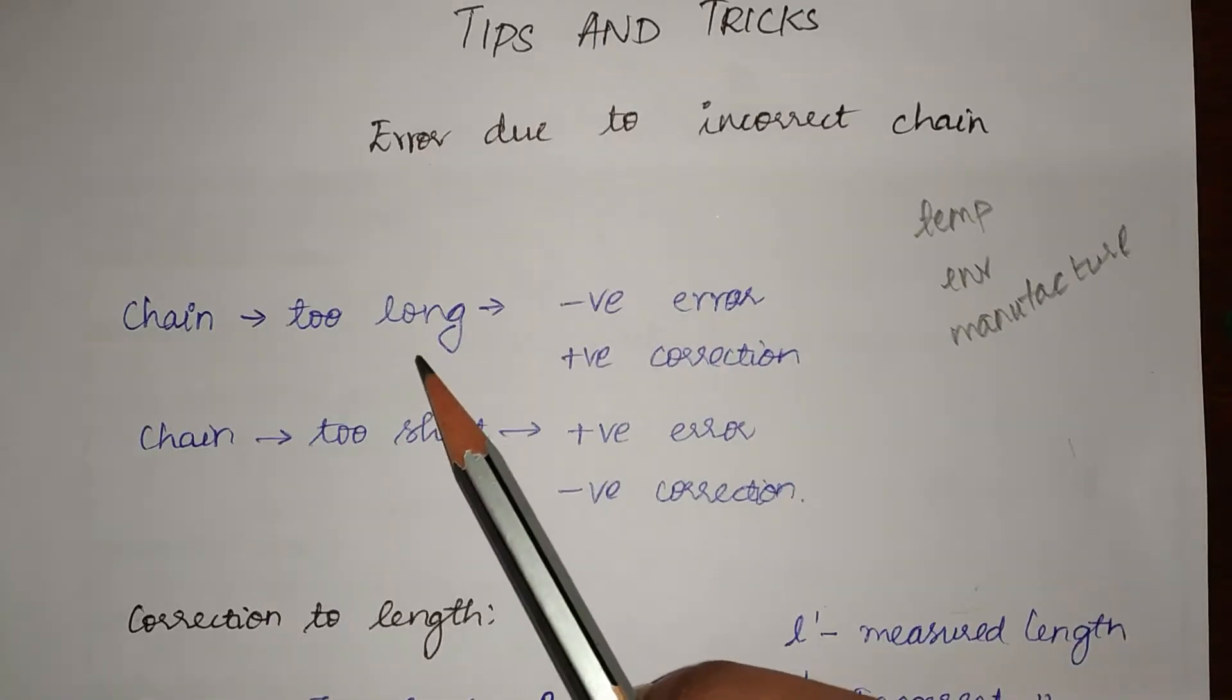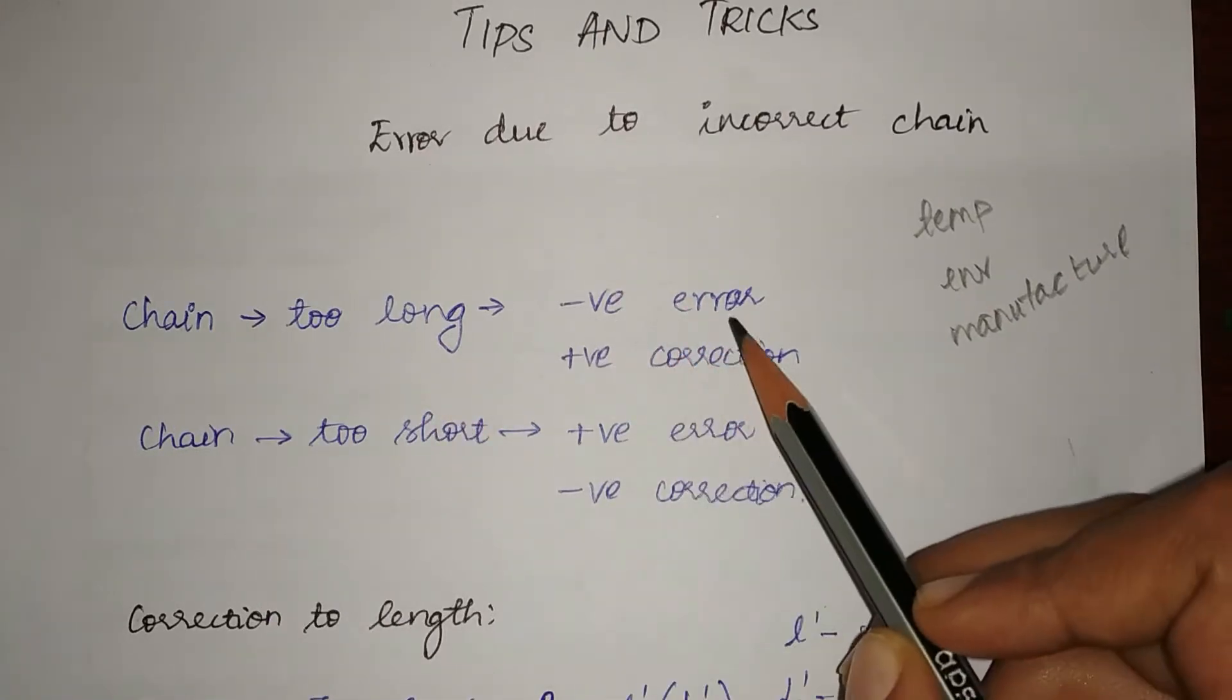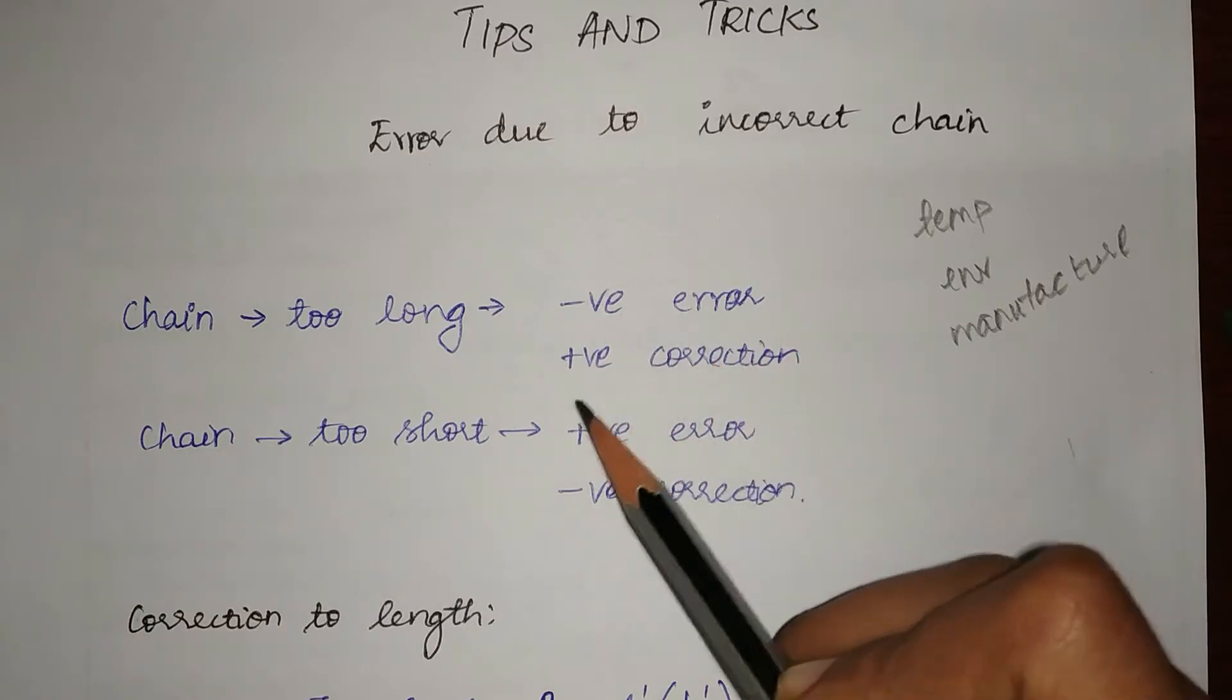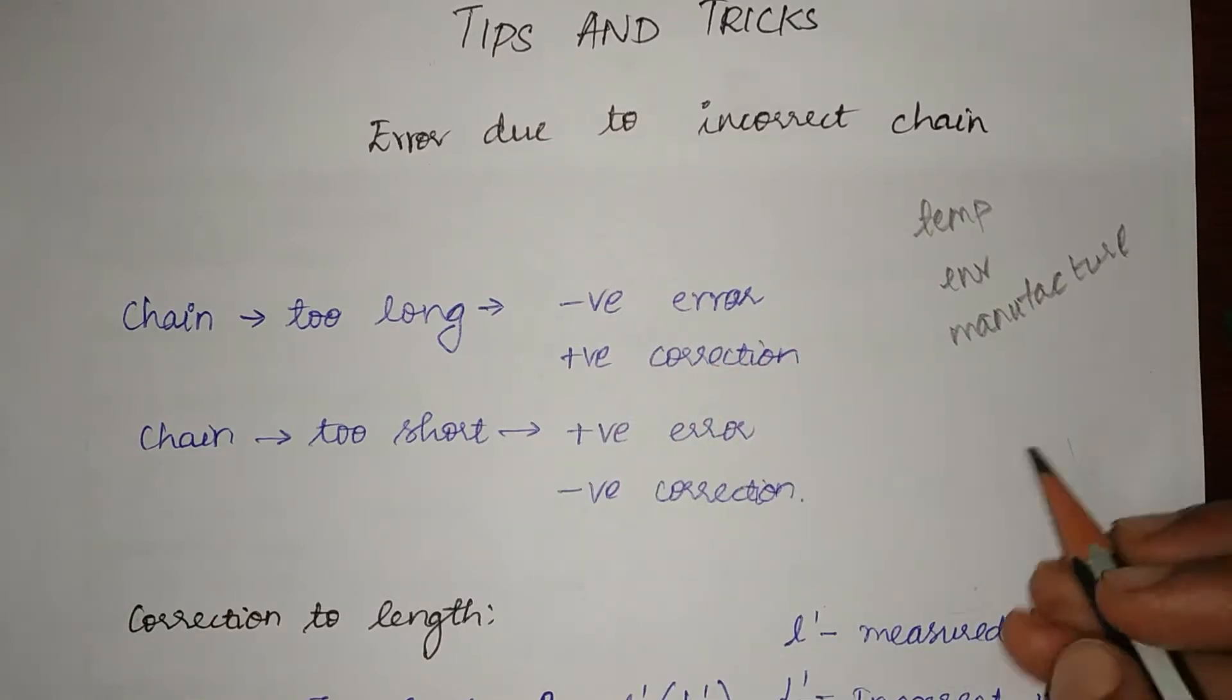If the chain is too long then we have a negative error and therefore a positive correction. Let me give a quick example.